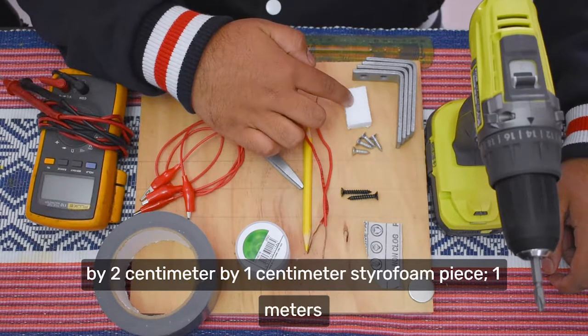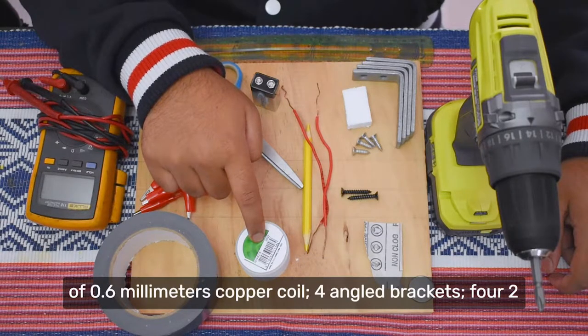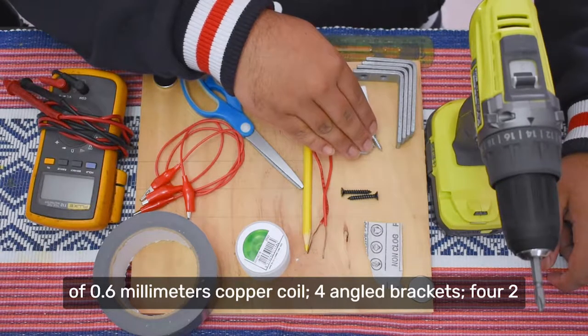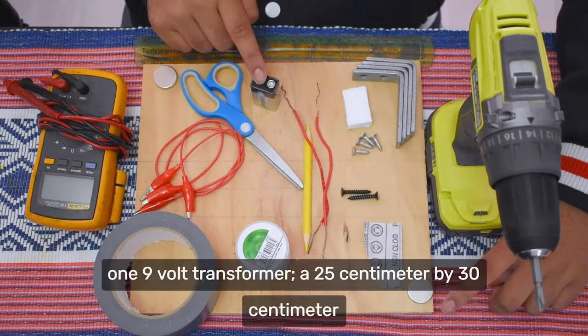a 3cm x 2cm x 1cm styrofoam piece, 1m of 0.6mm copper coil, 4 angled brackets, 4 2mm screws, 2 5mm wood screws, 2 magnets, 1 9v transformer,